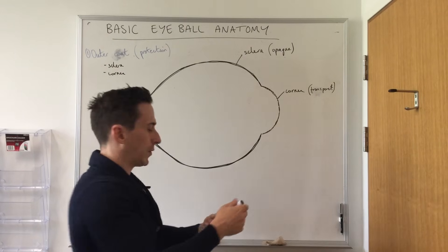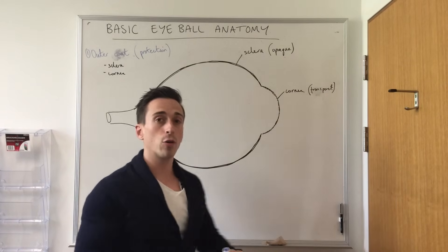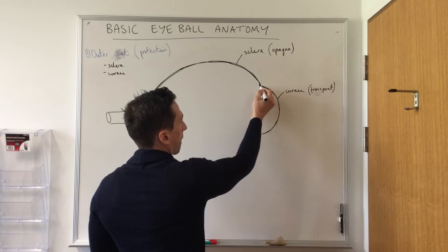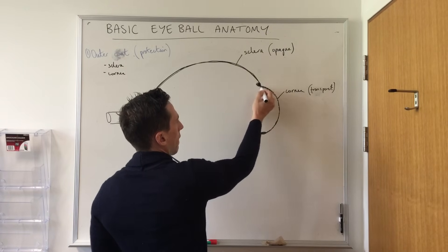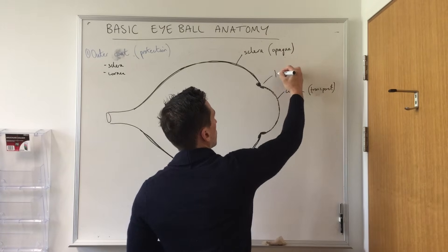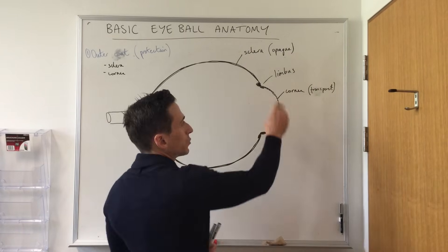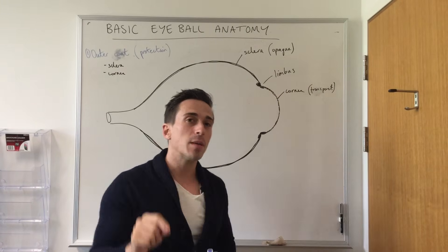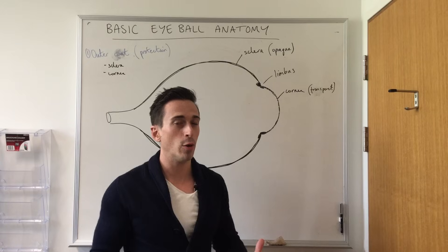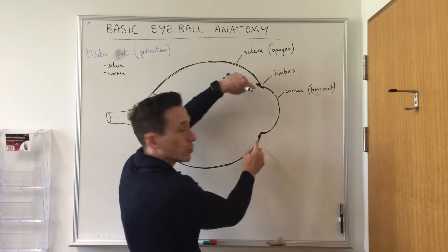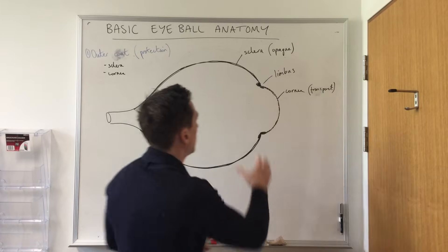Where the cornea becomes the sclera is called the corneoscleral junction, also known as the limbus. An important point about the limbus is this: the outermost of the five layers of the cornea is epithelia, and this epithelia cannot regenerate itself — it can't produce its own cells. So there needs to be a stem cell population, and that is located at the limbus. These stem cells produce new epithelia which migrate across to cover the surface of the cornea.